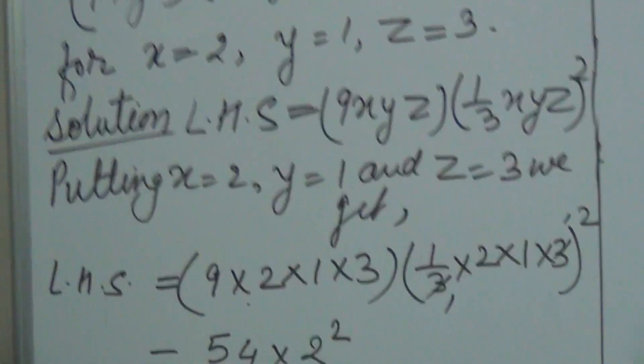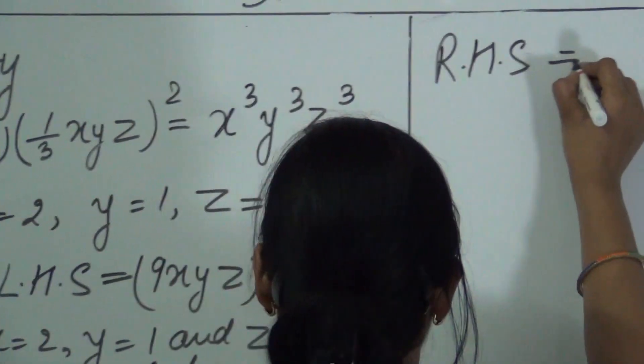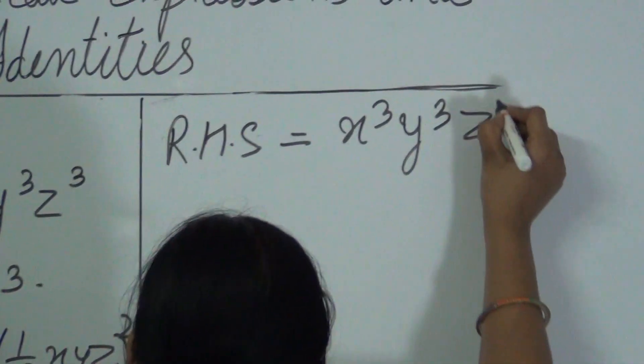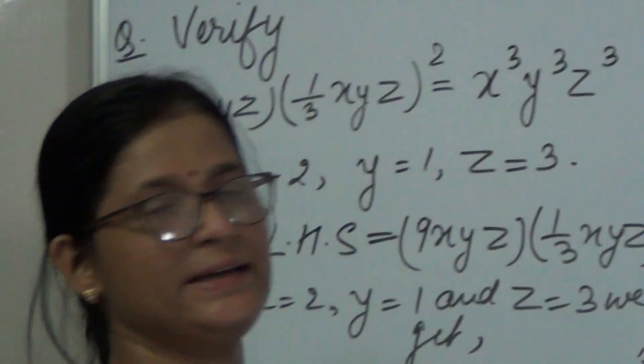Now let us proceed with the RHS. In the RHS we have X cube, Y cube, Z cube. So we will put the value of X, Y and Z here also.